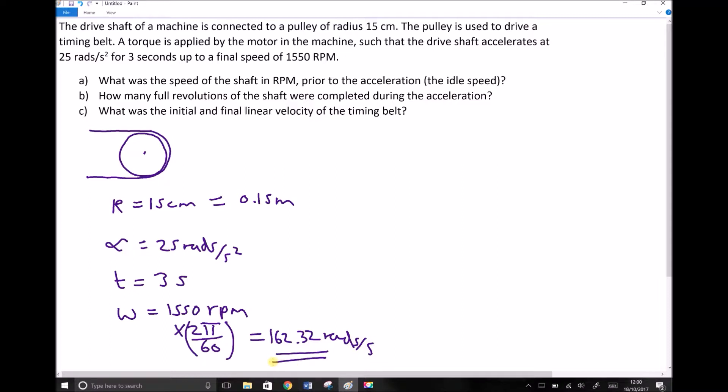So 1550 times 2 pi over 60 gives us an angular velocity of 162.32 rads per second in SI units. So now all of our variables are in the correct form to be inputted into our equations.